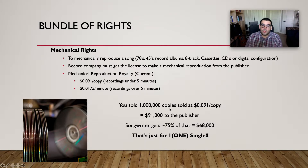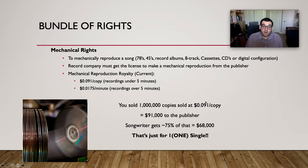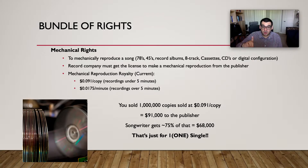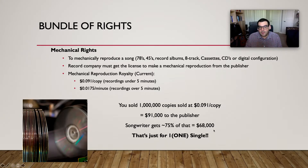Here's an example. Let's say you sold 1 million copies of a song that is less than five minutes. You're selling it at $0.091 cents per copy. Your publisher is going to make ninety-one thousand dollars. Of that ninety-one thousand dollars, you as the songwriter and artist get about 75 percent — approximately $68,000 from only one song if you sell a million copies. If you're going by the per-minute rate, you will not make as much.